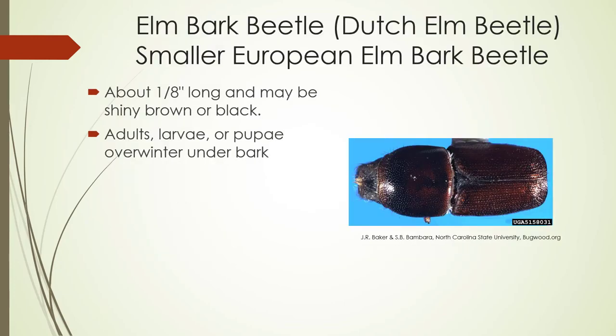The elm bark beetle, or Dutch elm beetle — specifically the smaller European elm bark beetle — is actually the primary cause of spreading Dutch elm disease, though other elm bark beetles also spread it. It's about an eighth of an inch long, shiny brown or black. Adults, larvae, or pupae overwinter under the bark.